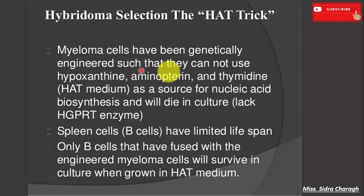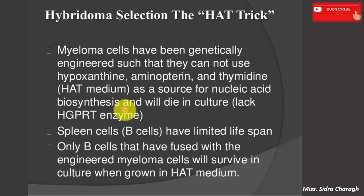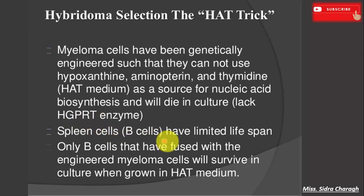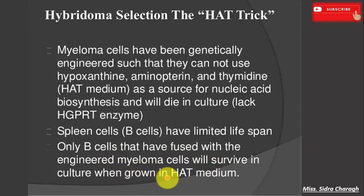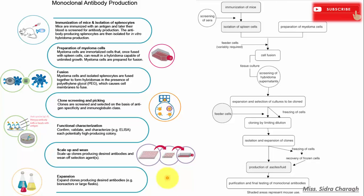Regarding the HAT selection mechanism: myeloma cells have been genetically engineered such that they cannot use hypoxanthine, aminopterin, and thymidine in the HAT medium as a source for nucleic acid biosynthesis, and will die in culture because they lack the HGPRT enzyme. Spleen cells have a limited lifespan. Only B cells that have fused with the engineered myeloma cells will survive and grow in the HAT medium.